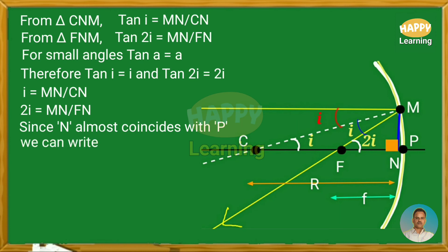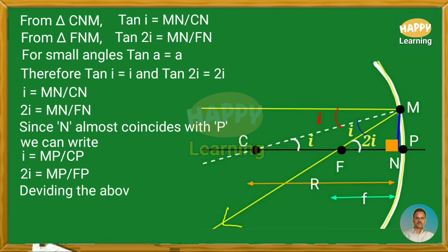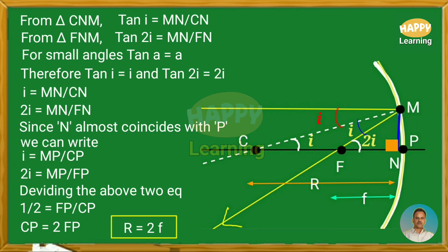We can write i is equal to MP by CP, and 2i is equal to MP by FP. Dividing the two equations, 1 by 2 equals FP by CP. On cross multiplication, we get CP equal to 2FP. But CP equals R and FP equals F. Therefore, R is equal to 2F. The radius of curvature of the mirror is equal to twice its focal length.